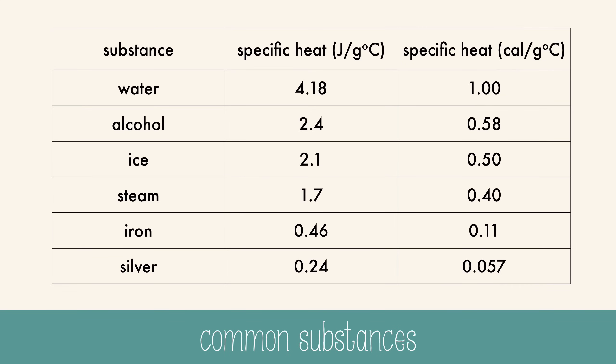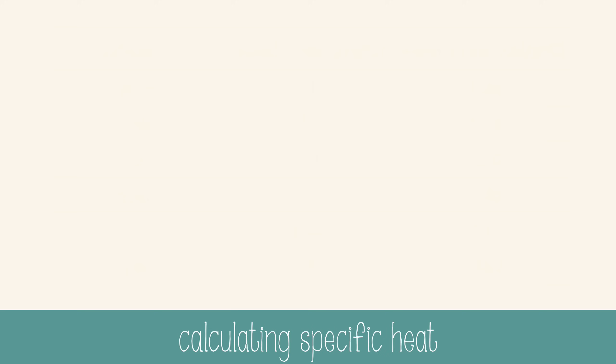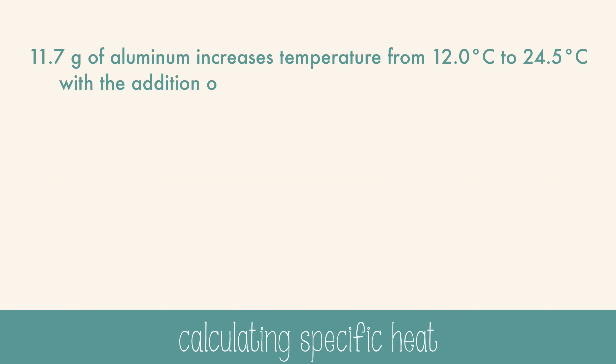This makes sense if you've ever boiled water in an iron pot. Even though the pot will be too hot to touch, the water may only be lukewarm. Let's try calculating the specific heat of a substance. 11.7 grams of aluminum increases temperature from 12 degrees Celsius to 24.5 degrees Celsius with the addition of 132 joules of heat. What's the specific heat?